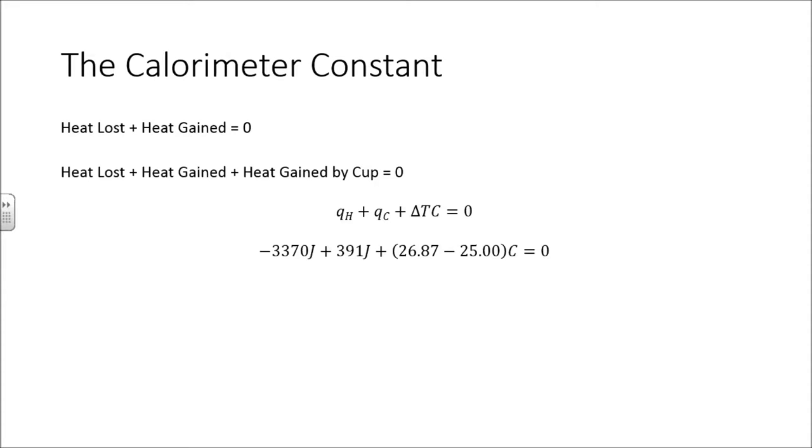And now, it's just simple mathematics. We combine like terms. We get the variable on one side. We do our division, and we get to 1590 joules per gram degree Celsius.